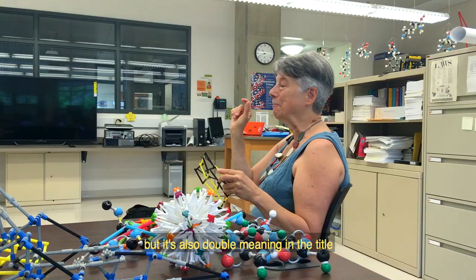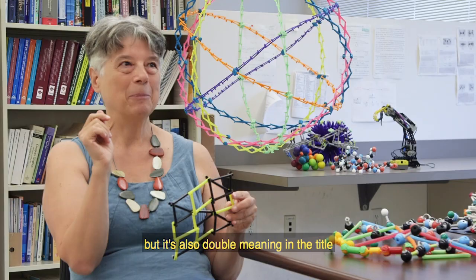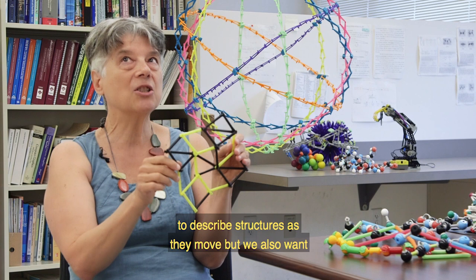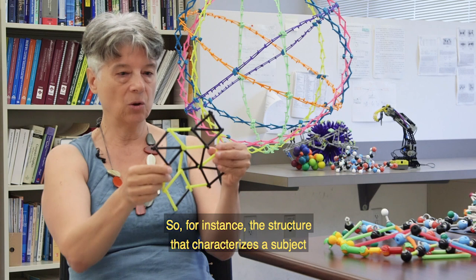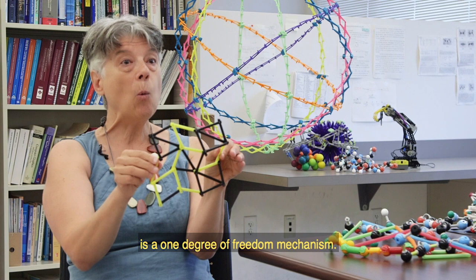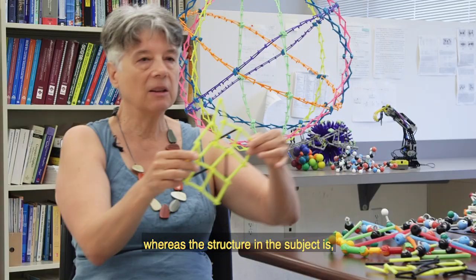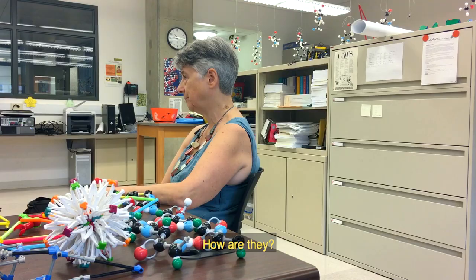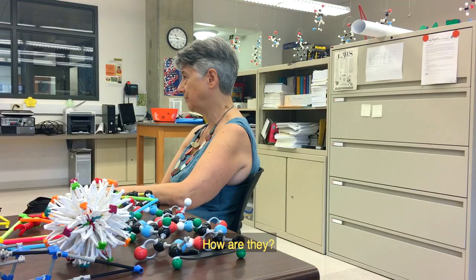That's finding motion in the structure, but it's also a double meaning in the title because we want to describe not just structures as they move but also find the structure in the process of moving. For instance, the structure that characterizes this object is a one degree of freedom mechanism, a motion that is well determined, whereas the structure in this subject is a two-dimensional space. They are somehow related. How are they?